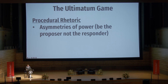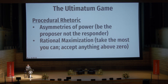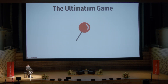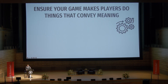In the context of the ultimatum game, procedural rhetoric is telling us some things. It's telling us that there are asymmetries of power — it's better to be the proposer than the responder. Also, in line with rational maximization, the system is telling us you should take the most you can because you can. And really, anything above zero is a win. So in a way, Kim, you made perfect sense. But there's more going on here, as economists know. With procedural rhetoric, the point is to ensure your games make players do things that convey meaning. Everything that they do is conveying meaning — you just want to make sure it's closer to the meaning you initially intended. And in the context of history games, you want to ensure your games make players do things consistent with being historical actors.